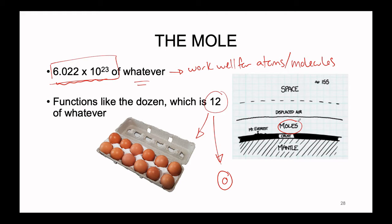A mole of moles, just to emphasize how big the number of the mole is, would cover the earth a distance of 80 kilometers deep. In this illustration, there's the mantle, the earth's crust, and the height of the mole of moles across the entire planet — an even distribution over the surface. It would cover the surface 80 kilometers deep. We can see Mount Everest here, and all the displaced air gets pushed upwards. From the surface of the earth, buried underneath this mole of moles, the moles get you one-third of the way to the International Space Station.